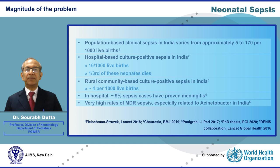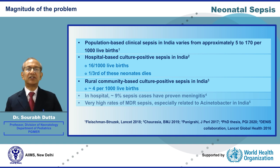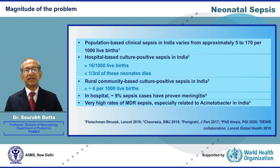In another global systematic review of population-based studies on clinical Sepsis, the incidence in India varies between 5 to 170 per 1000 live births depending upon the setting. In hospital settings, the average incidence of culture-positive Sepsis is 16 per 1000 live births and approximately one third of these infants die. In a recent large community-based study in India, 4 out of every 1000 live-born infants had culture-positive Sepsis. In a hospital setting in India, 9% of cases of suspected Sepsis had proven meningitis. Unfortunately, several studies have reported very high rates of multi-drug resistant Sepsis, particularly in hospital settings, with carbapenem resistance especially associated with Acinetobacter baumannii Sepsis.